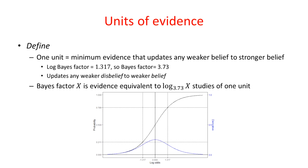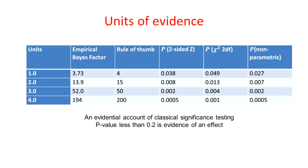In general, if we have a Bayes factor of x, we can say that is evidence equivalent to log base 3.73 of x, equivalent to that many studies that each provide one unit of evidence.